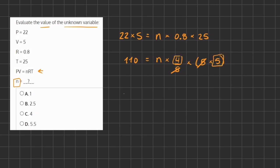On the left hand side we still have 110, and on the right hand side we have n times 4 times 5. This 4 times 5 gives us 20, so we have 20n.